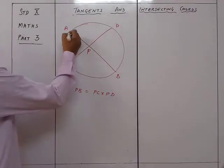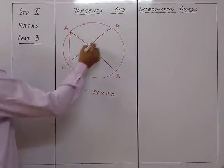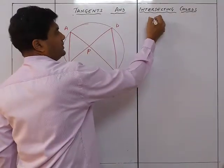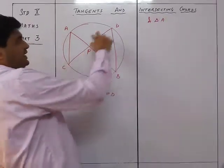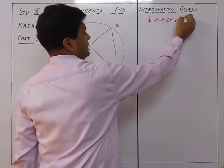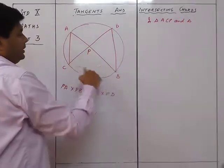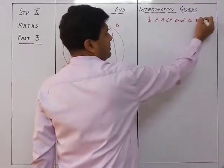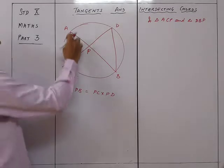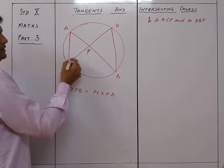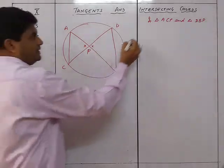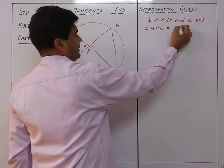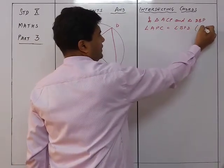To prove this, we draw two triangles: triangle ACP and triangle DBP. We can see that angle APC equals angle BPD — vertically opposite angles. So angle APC = angle BPD (vertically opposite angles).